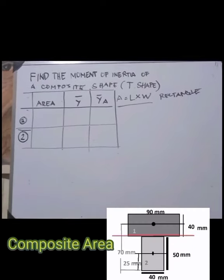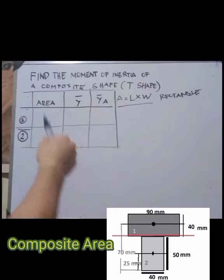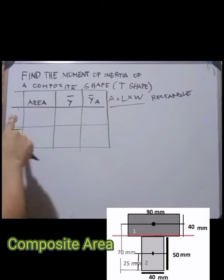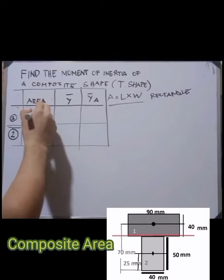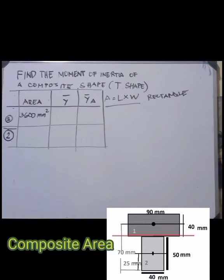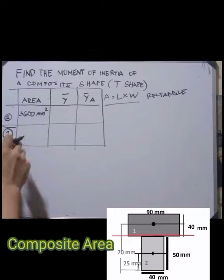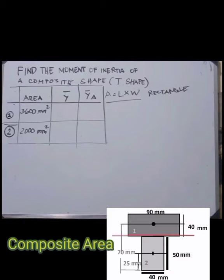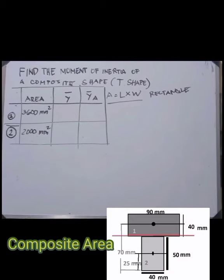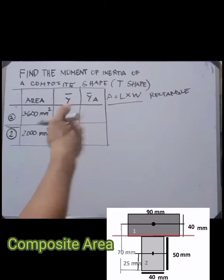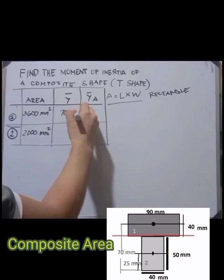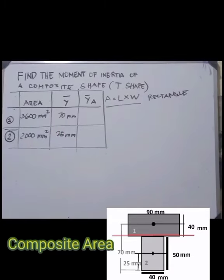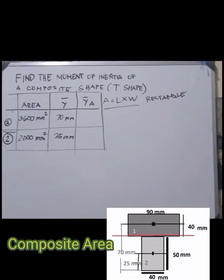Find the moment of inertia of the composite T-shape. We divide it into two rectangles. The area of the first rectangle is 3600 mm² and the area of the second rectangle is 2000 mm². The ȳ for the first rectangle is 70 mm and for the second rectangle is 25 mm.